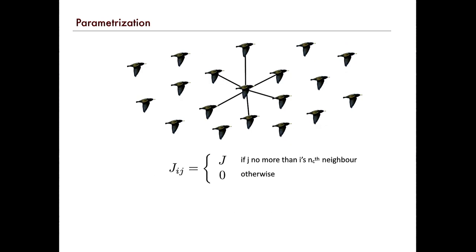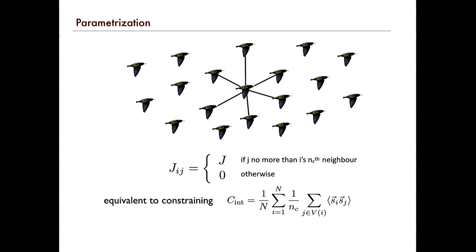Constraining the correlation function, which leads to this probability distribution for the directions of birds, is completely equivalent to these kinds of models. Of course, it does not mean this is the correct dynamics or the only possible one — these are all effective models, and these interaction matrices are effective interactions. It doesn't mean there's some special channel of direct communication between these birds; this could be transmitted through fluctuations of the environment or many different ways.